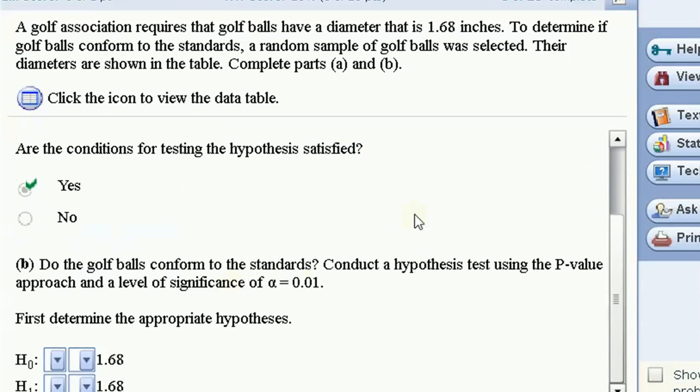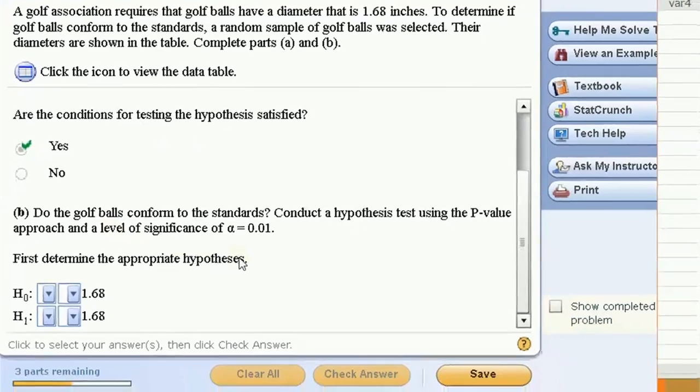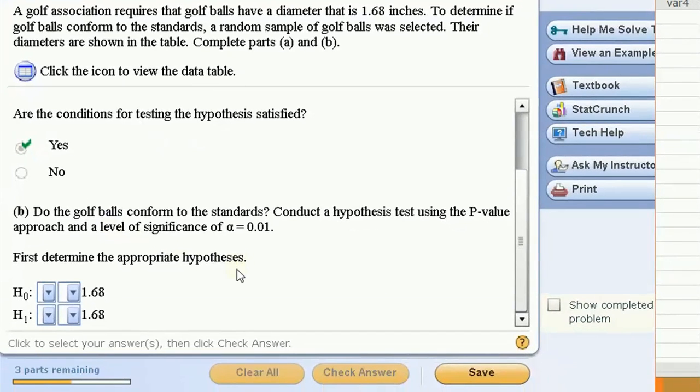What we want to do is do this hypothesis test. Do the golf balls conform to the standards? Conduct a hypothesis test using the p-value approach. So the null hypothesis is that the population mean equals 1.68. The alternative is that the golf balls, the mean width, does not equal 1.68.